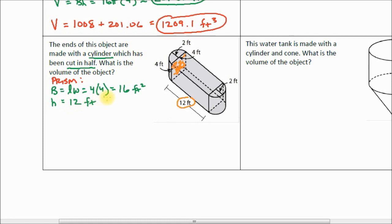The volume is base area times height, which is 16 times 12, and that's equal to 192 feet cubed. There is our volume of our prism. Now we've got to deal with the volume of these two ends.